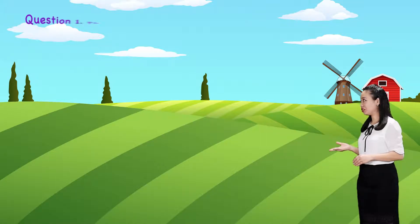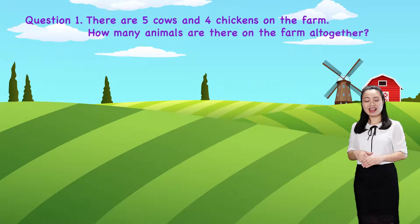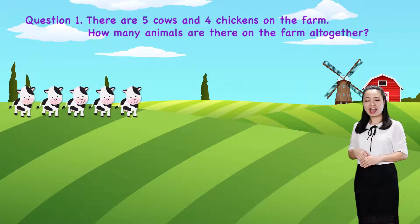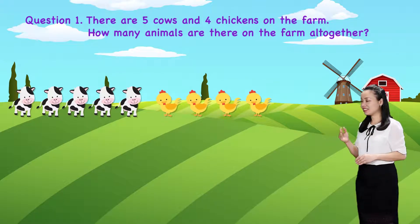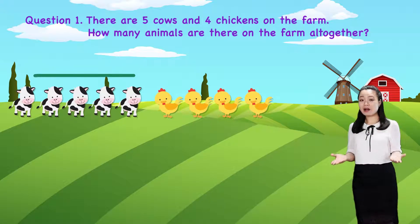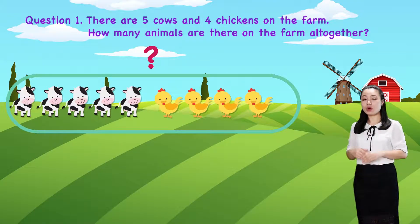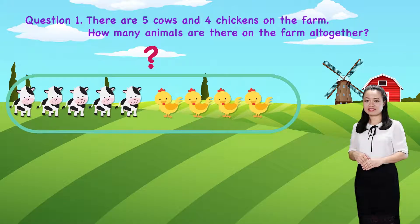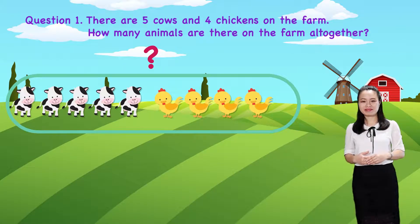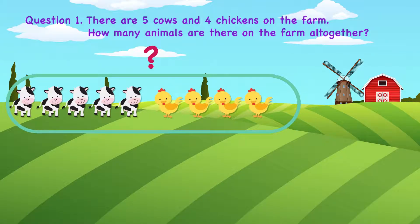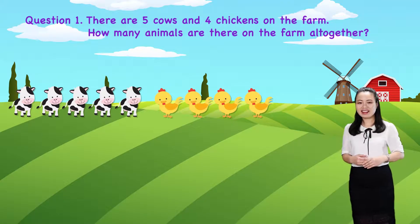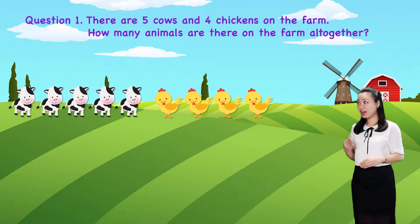Now, let's have some practice. Question 1. There are 5 cows and 4 chickens on the farm. How many animals are there on the farm all together? I give you some time to find the answer by yourself. Let's find the answer together. Let's count.